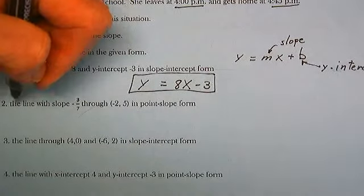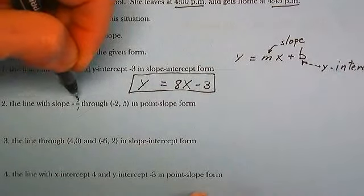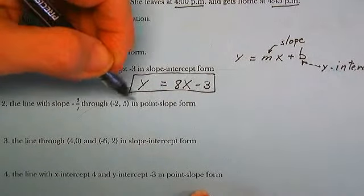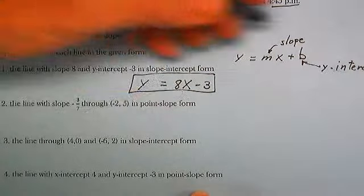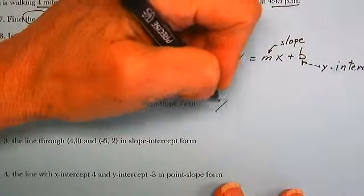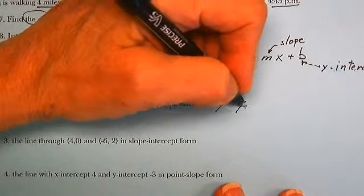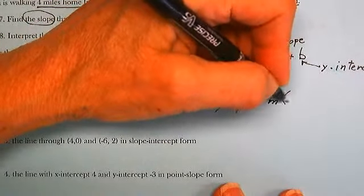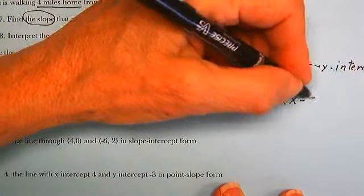Number 2, the line with slope negative 3 sevenths through negative 2, 5 in point-slope form. Point-slope form is y minus y1 is equal to the slope times x minus x1.